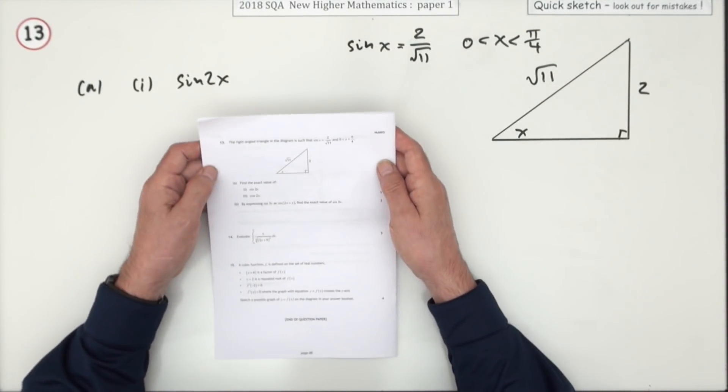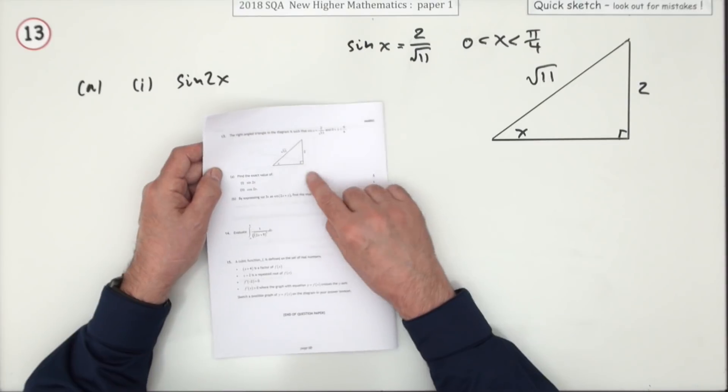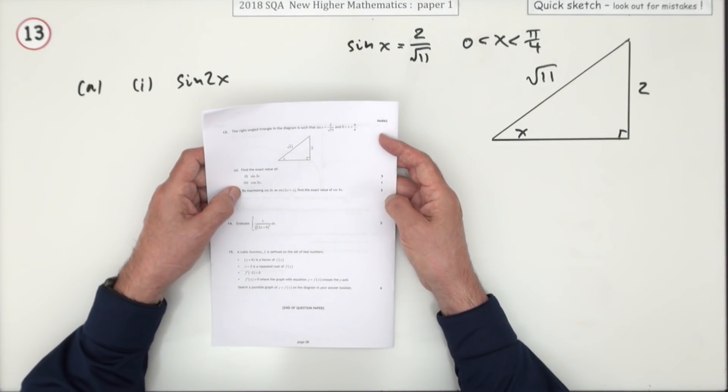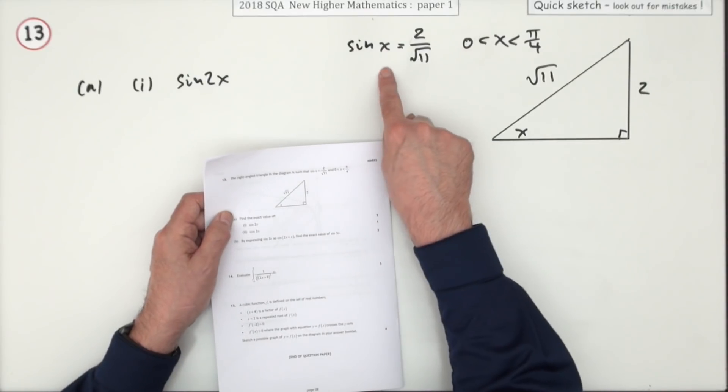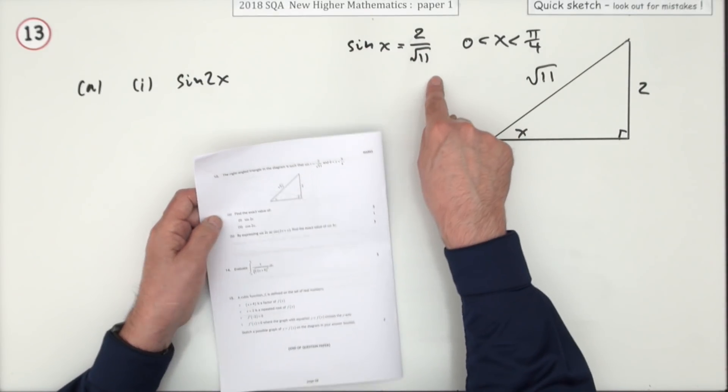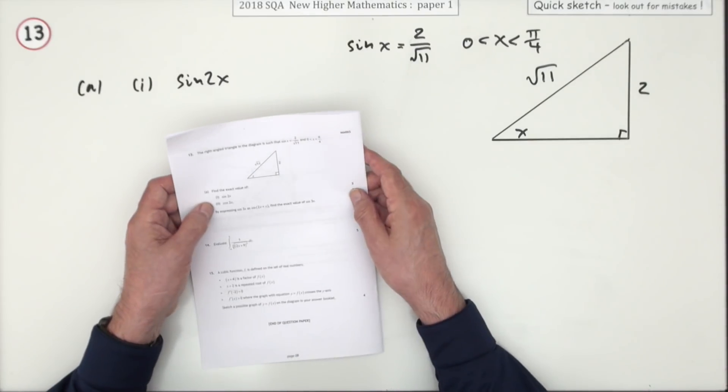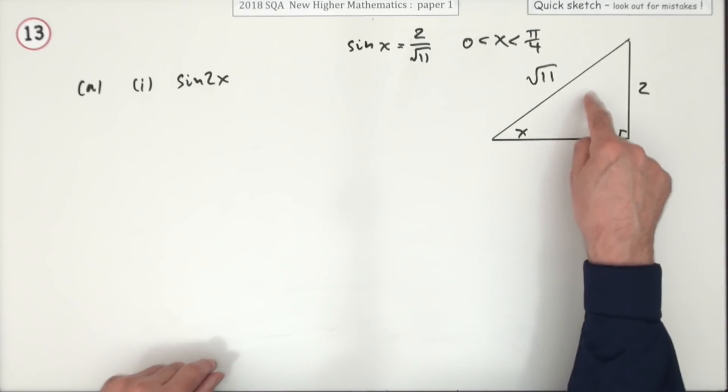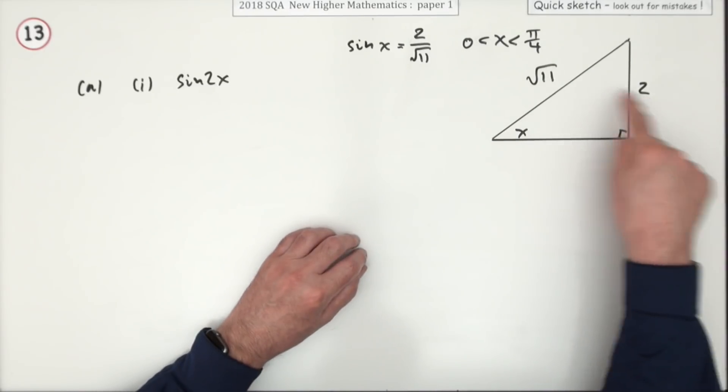Number 13 from paper 1 of the 2018 Higher Maths, an exact value trig question worth seven marks. You're told that sine of x is 2 upon root 11. You've defined the exact value of sine of 2x, and just in case you weren't sure how to go about it, it started off with a little triangle showing you sine of x.